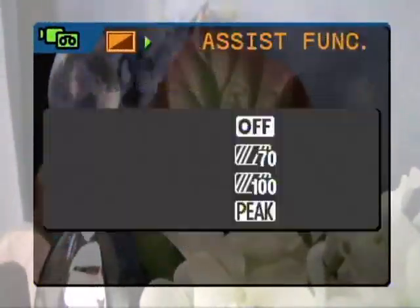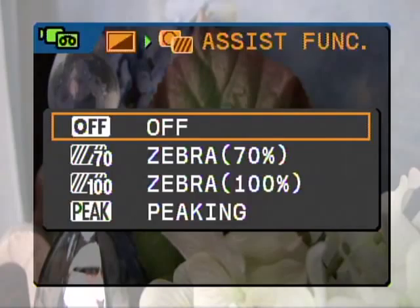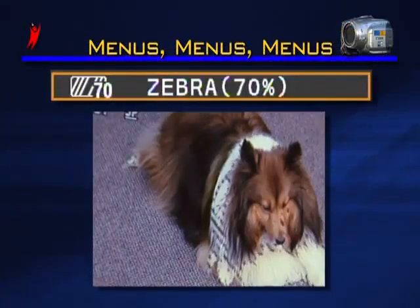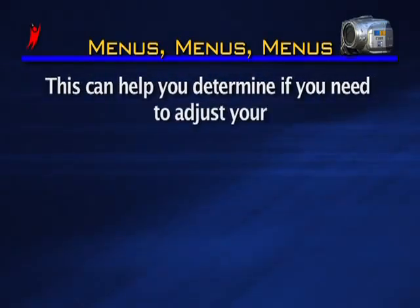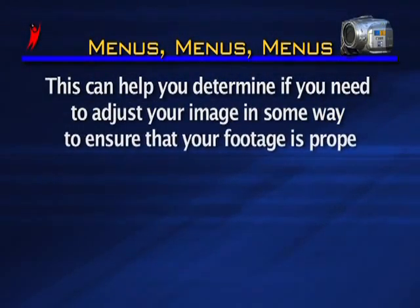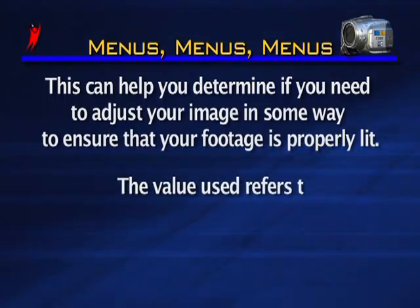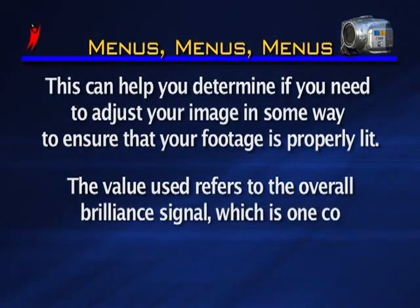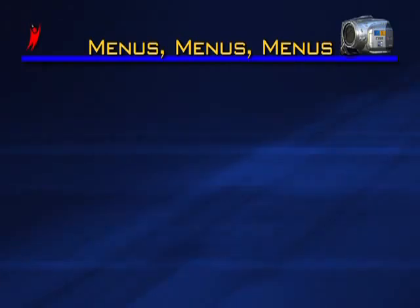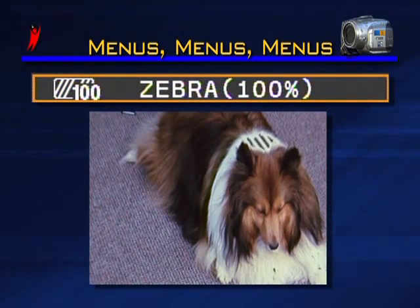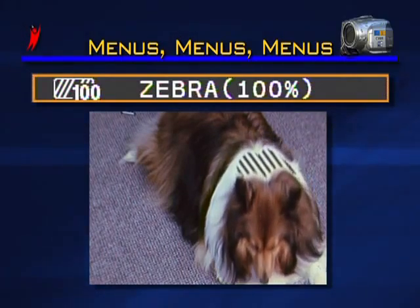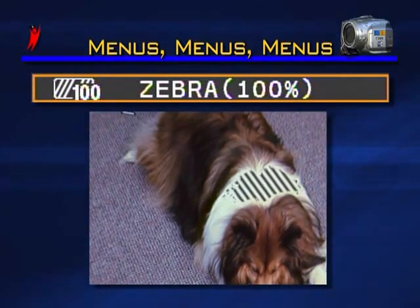Assist function gives you additional guides to help determine proper exposure and focusing of your scene. Zebra allows you to see portions of your image that are too bright, helping you determine if you need to adjust your image to ensure footage is properly lit. The value used refers to the overall brilliance of the signal. Zebra 70% shows a pattern over areas exceeding 70% of the brilliance signal, while Zebra 100% shows any areas of your scene that are over 100% of the brilliance signal.